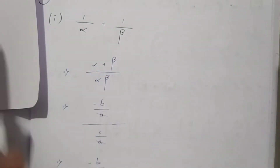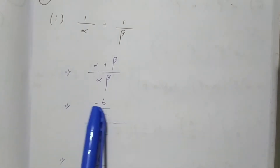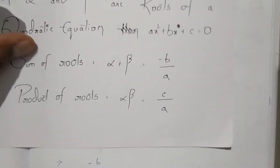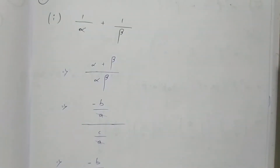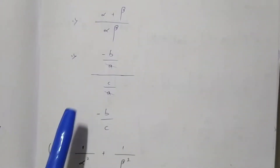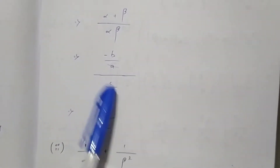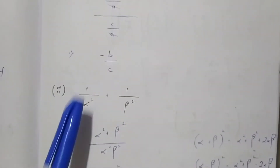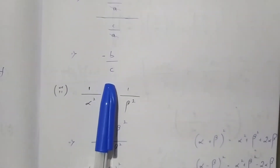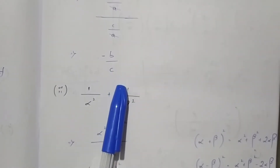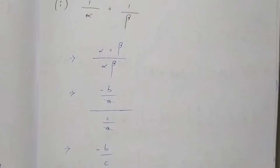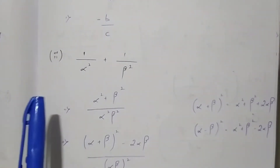Now comes alpha into beta in the denominator — the product of roots is c by a, so we substitute c by a. We cancel a with a and we get the final answer as minus b by c. So this is the value of the expression 1 by alpha plus 1 by beta.